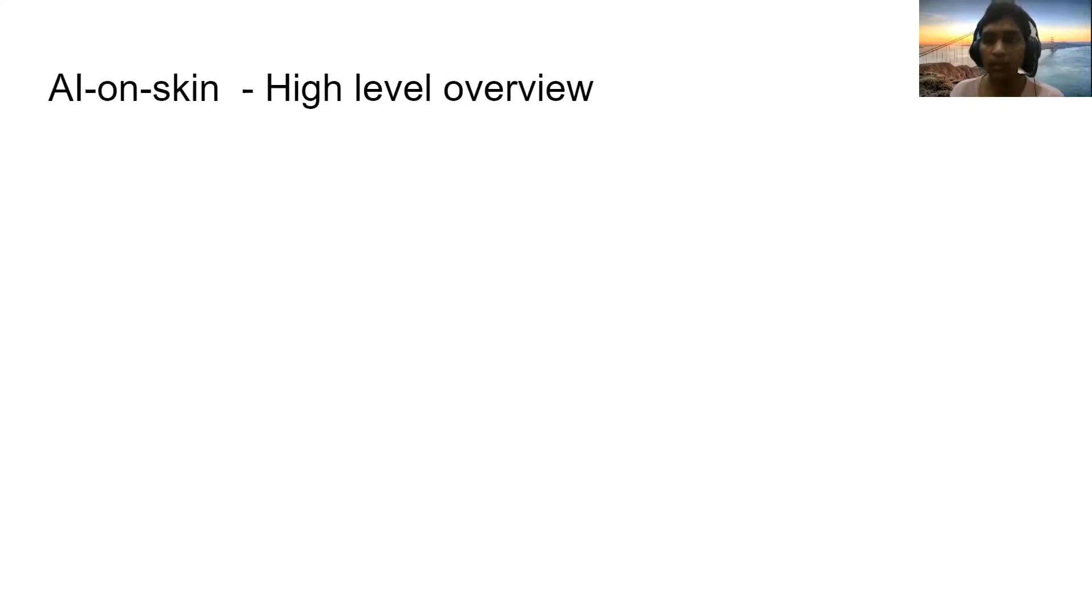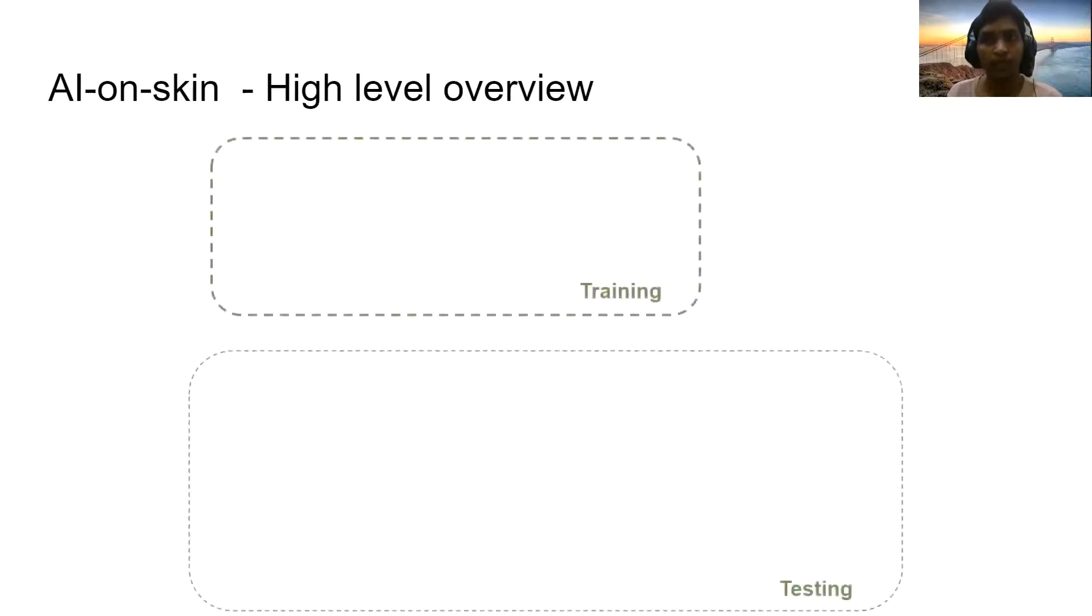Let us have a look at how AI on skin can be implemented for current artificial skin interfaces. For this walkthrough, we will be using an application of handwritten English alphabet recognition. It consists of two phases: one is the training phase and the testing phase.